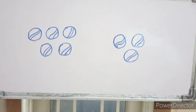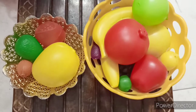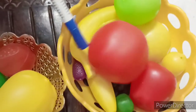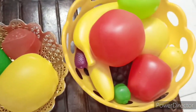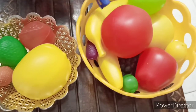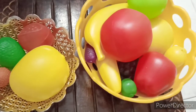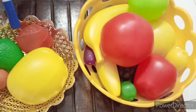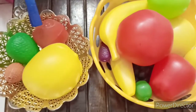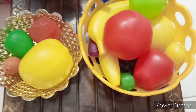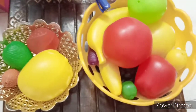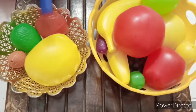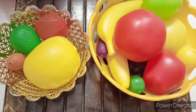Now see here, kids — you have two baskets. Which basket has many fruits — the yellow basket or the other basket? The big basket! Yes, the big basket has many fruits. The other basket has only a few fruits. So this has many fruits and this has few fruits. Many means more number, few means less number. Understood?